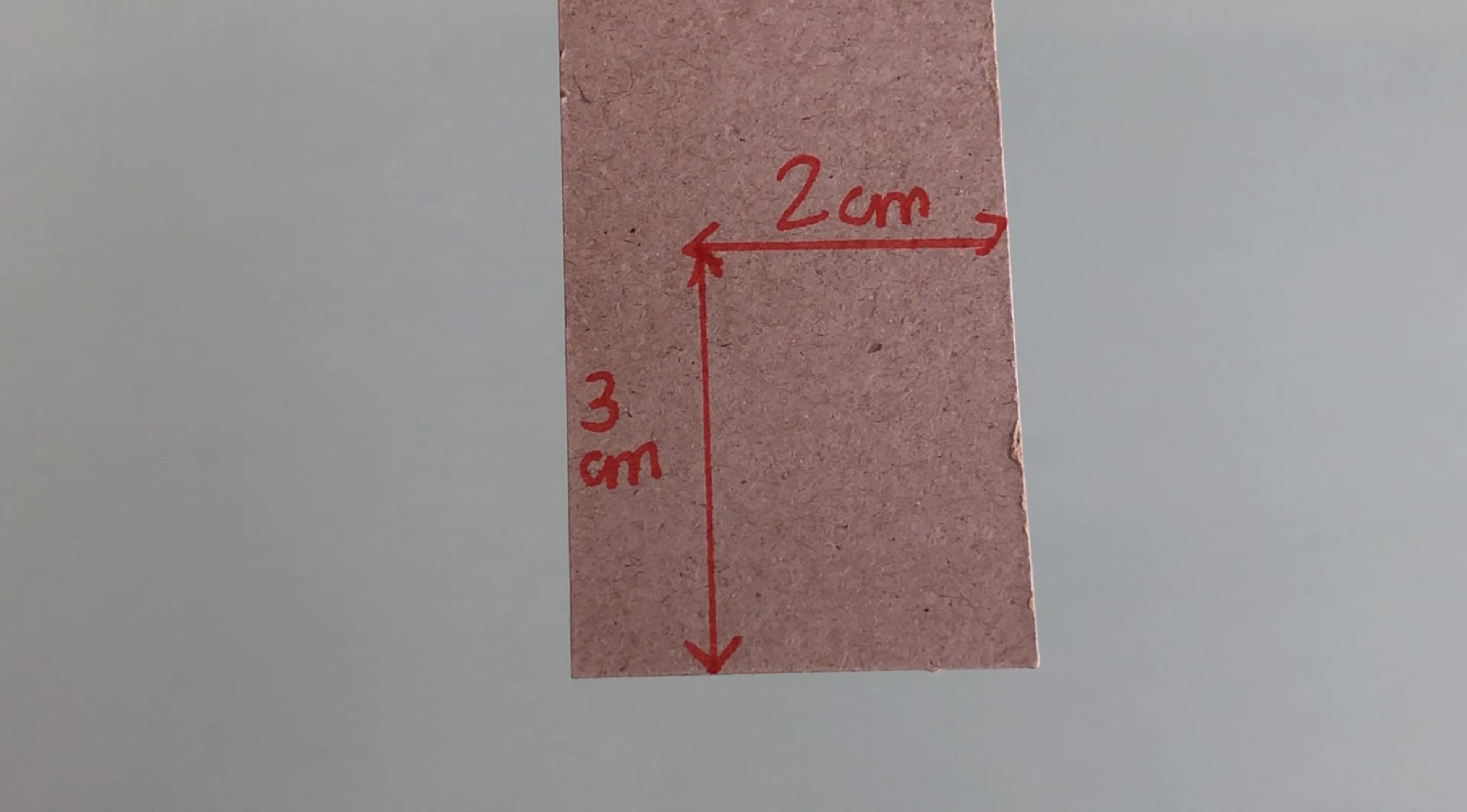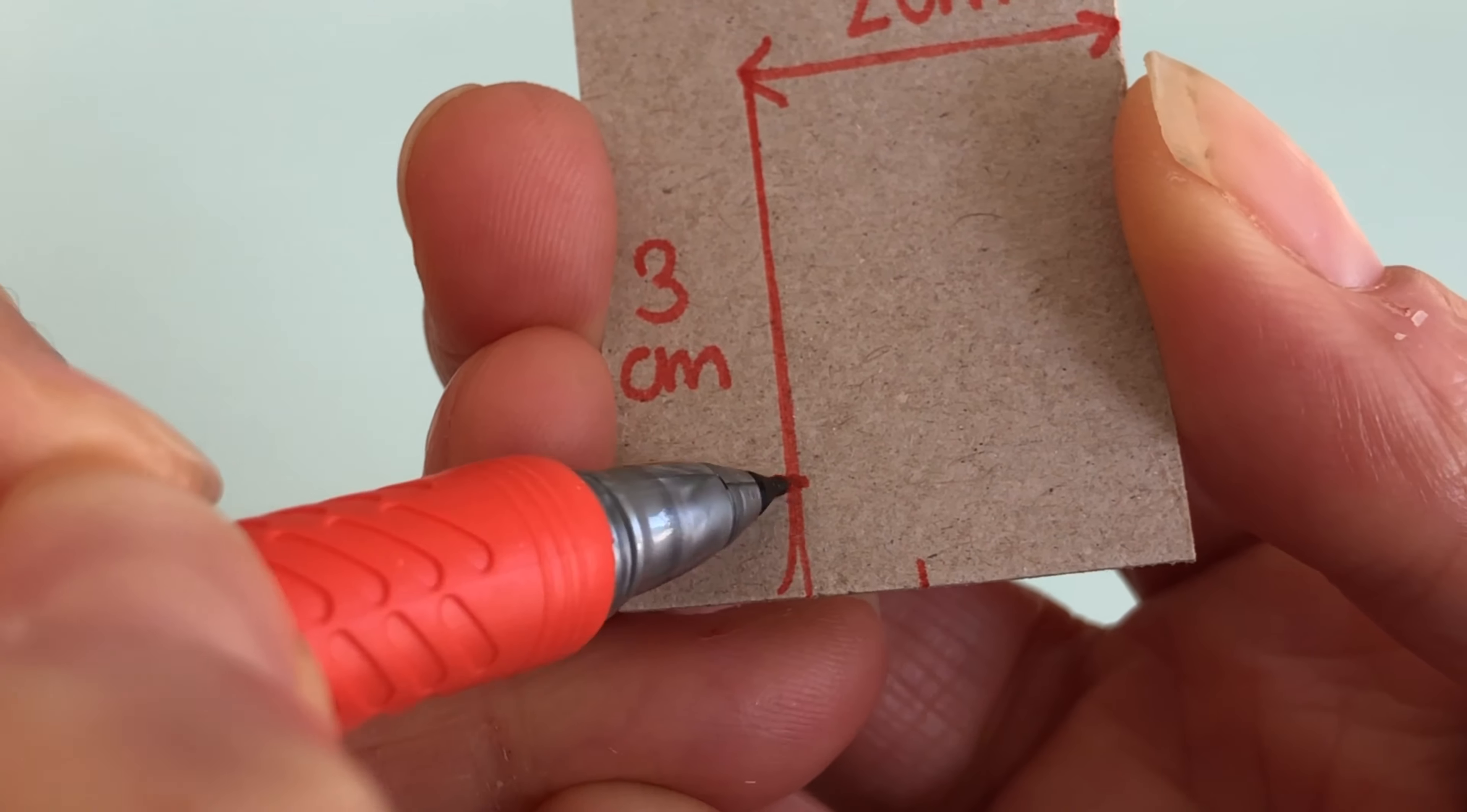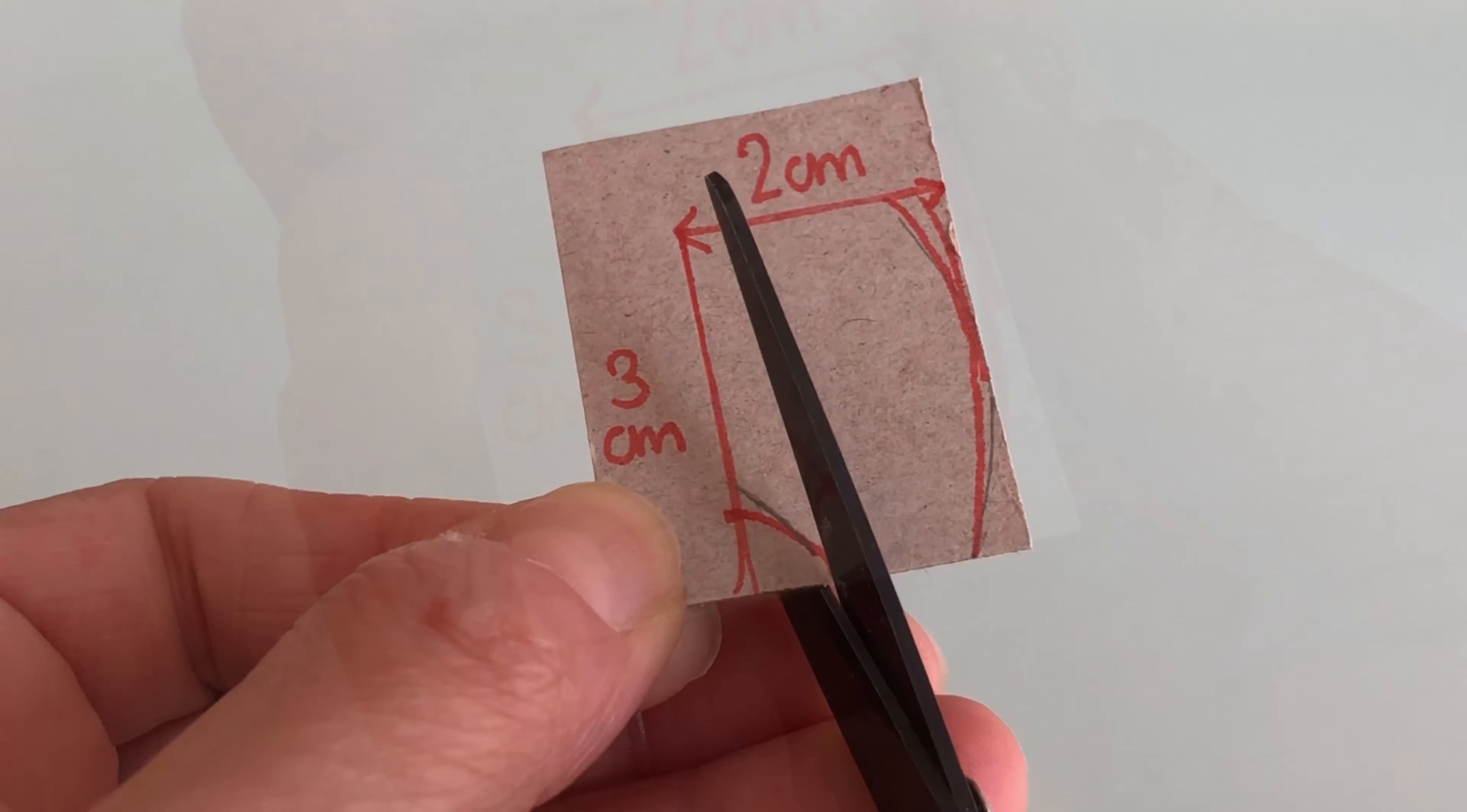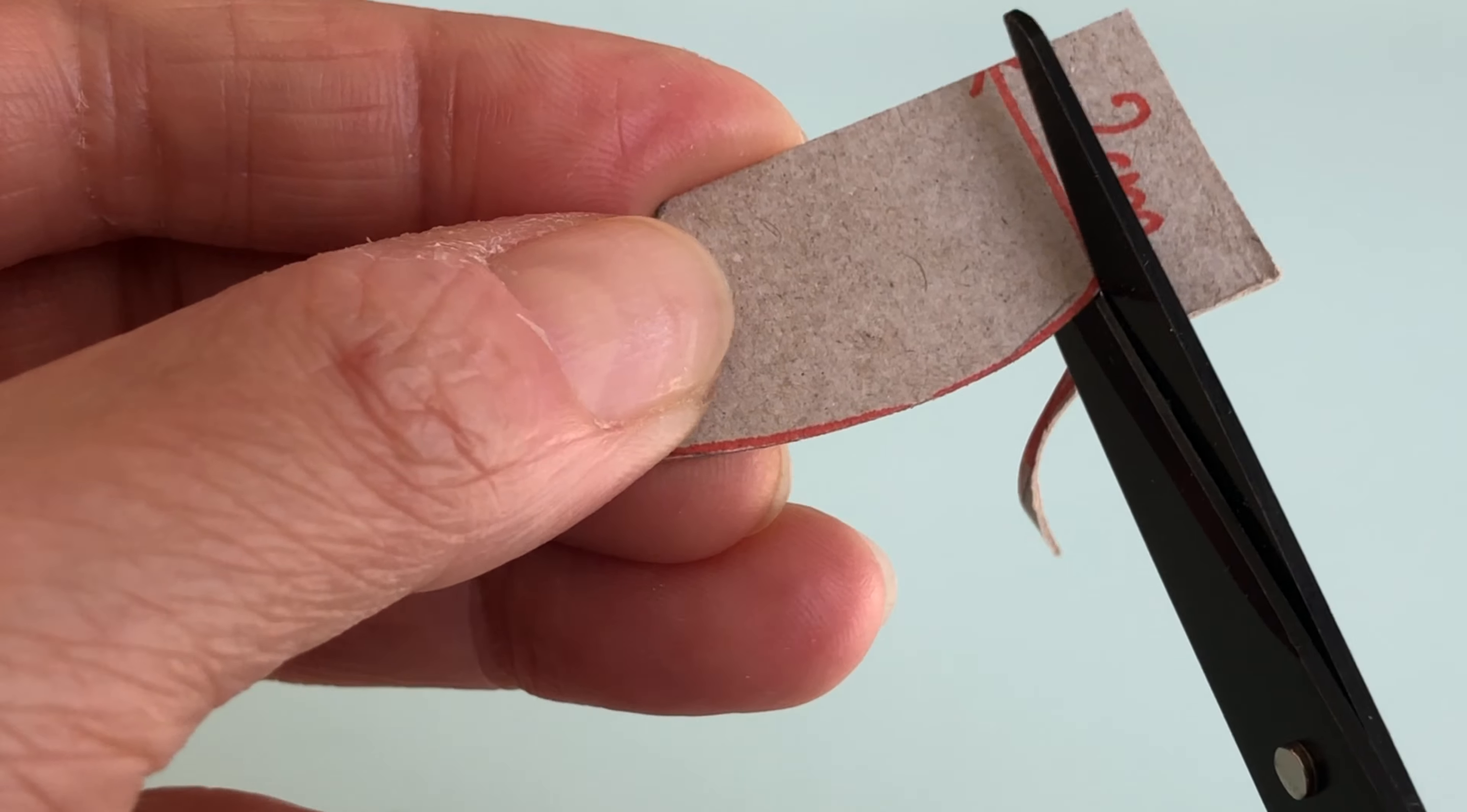Start with a rectangle of paperboard. At one corner, make tick marks half a centimetre up and along the sides. Draw a curve to connect them. Next, measure in half a centimetre from the top edge and draw another curved line to the bottom edge. Cut along your lines to get the spatula template.